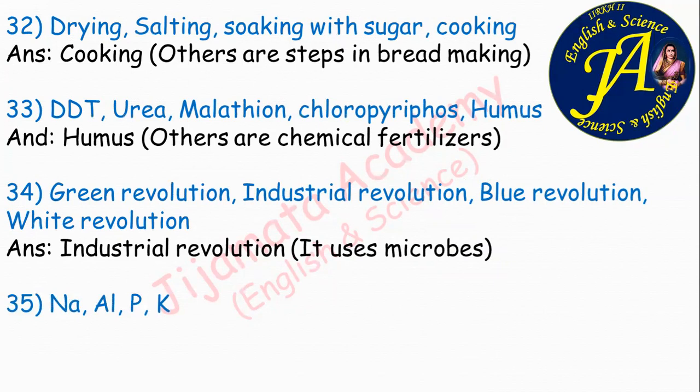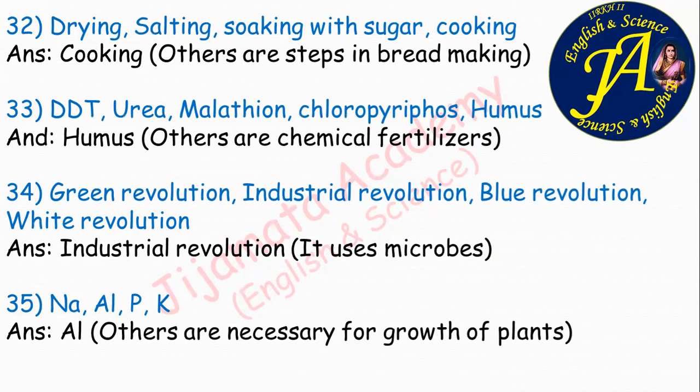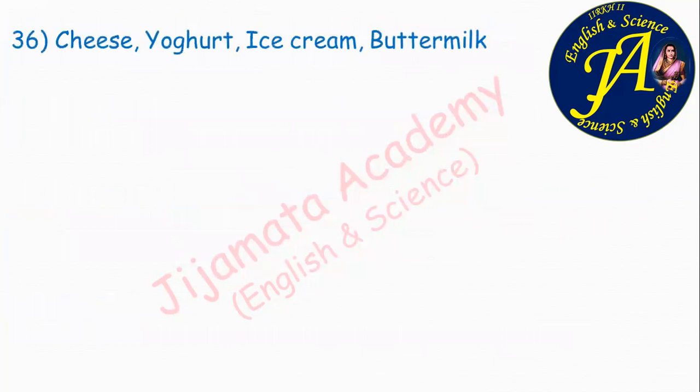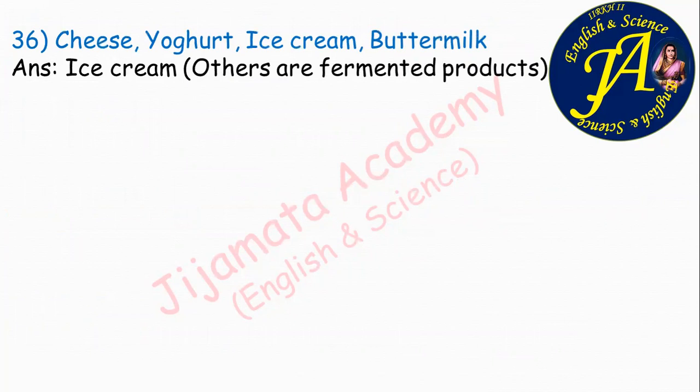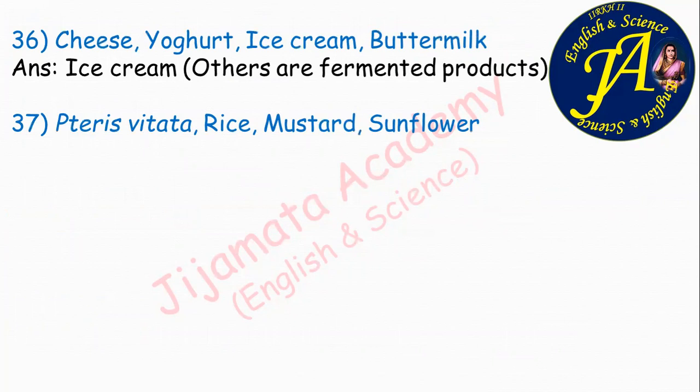Sodium, aluminium, phosphorus, potassium. The correct answer is aluminium, because all others are necessary for the growth of plants. Cheese, yogurt, ice cream, buttermilk — correct answer is ice cream, because all others are fermented products. Terris, vitata, rice, mustard, sunflower — correct answer is rice, because all others are used in bioremediation.